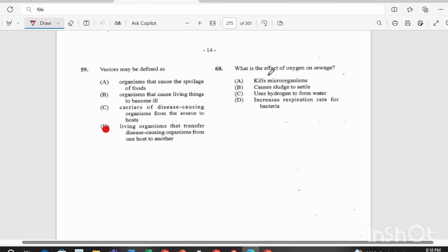And question 60. What is the effect of oxygen on sewage? A. It kills microorganisms. B. It causes sludge to settle. C. It uses hydrogen to form water. Or D. It increases respiration rate for bacteria. Answer there is D.